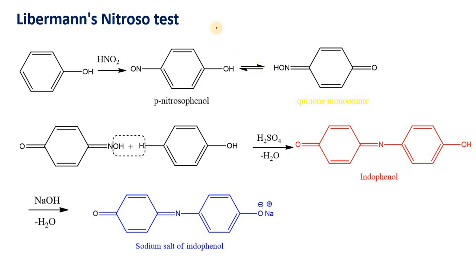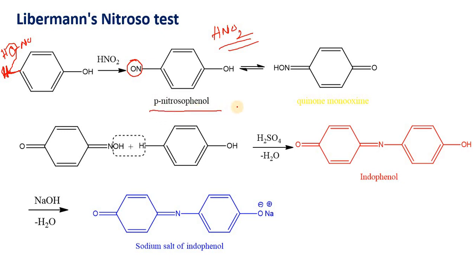In Liebermann's nitroso test, the reagent is nitrous acid, HNO2. When you treat phenol with HNO2, there is a removal of hydrogen at the para position, and the nitroso group (NO) is substituted at the para position. You will get para-nitrosophenol. There is a tautomerism between the nitroso form and the oxime form — this is phenol mono-oxime. There is an equilibrium between para-nitrosophenol and quinone mono-oxime, and this tautomerism is called nitroso-oxime tautomerism.